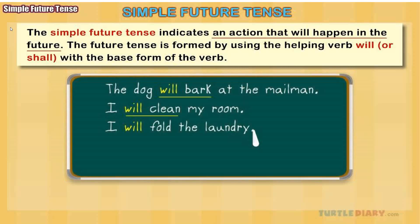Let's see examples. 'The dog will bark at the mailman.' Suppose I have a dog at home and whenever any stranger comes, the dog starts barking. So I am assuming that the dog will bark at the mailman when the postman or any stranger comes. Another example: 'I will clean my room.'